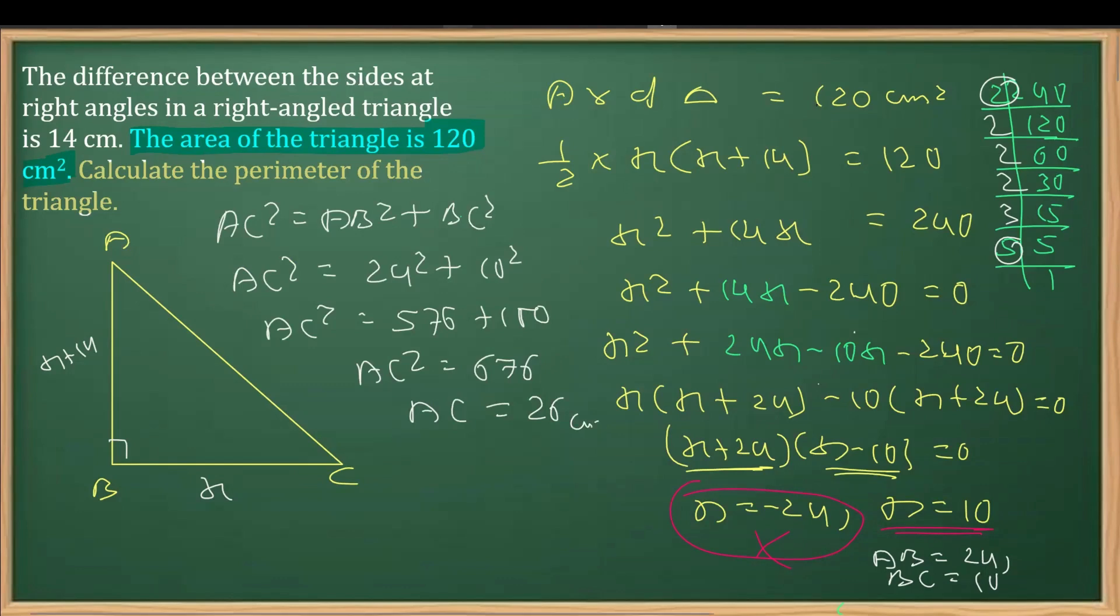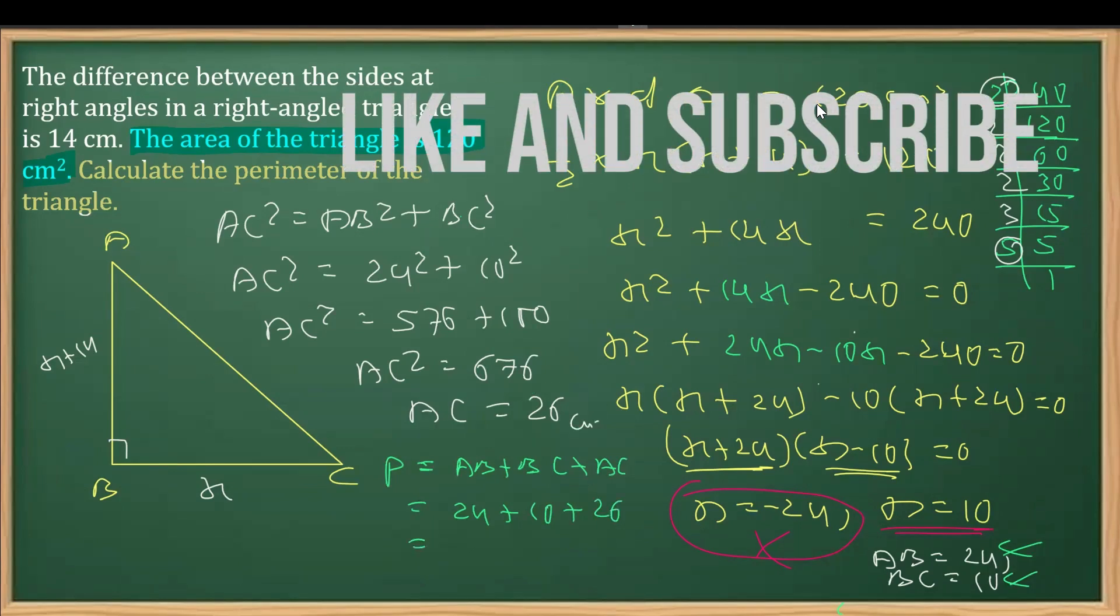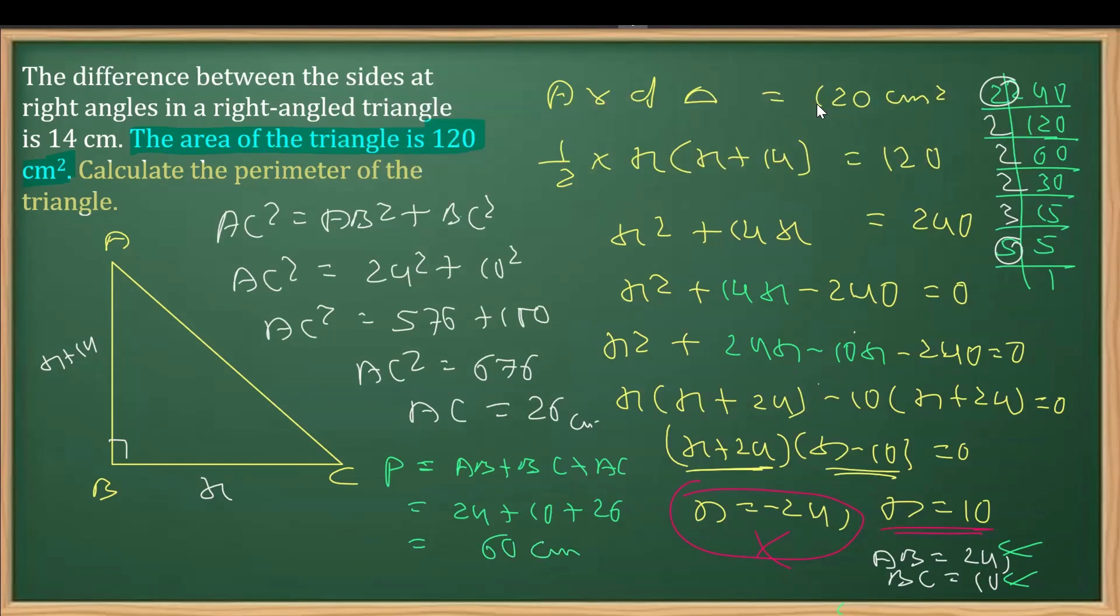So now we know that perimeter is the sum of the three sides. So we'll get the perimeter as the sum of three sides, that is AB plus BC plus AC. We know the length of AB from here, that is 24 centimeter, BC is 10, and AC we got as 26. So this is 24, that is 60, right, this is 50 plus 10, 60 centimeter is the perimeter. That's how we will do this question.